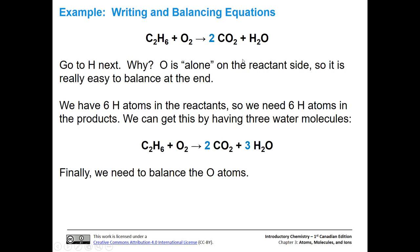Let's go to hydrogen next. Why not oxygen? Well, oxygen is alone on the reactant side, which makes it really easy to balance at the end. Hydrogen is not alone, so let's handle it next. We have six hydrogens on the reactant side and only two hydrogens on the product side. So we add a three coefficient in front of water — three times two is six. Now the hydrogens are balanced. Oxygen is alone on the reactant side, so we can count up the oxygens on the product side and just add a coefficient at the very end.